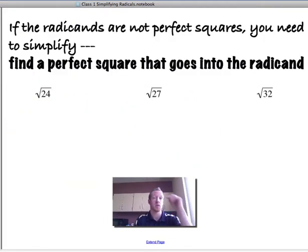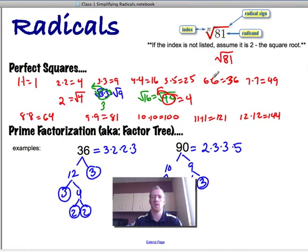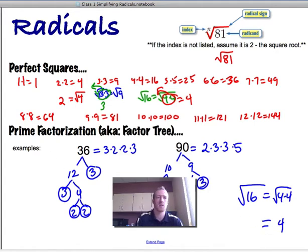So let's see how we use that in simplifying radicals. If the radicals are not perfect squares, like if I do the square root of 16, that's just square root of 4 times 4, so by the definition of square roots that's just a 4. If they're not perfect squares, we're going to want to use this factor tree.